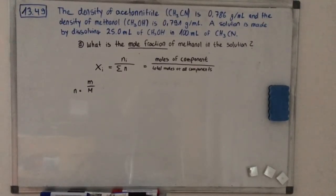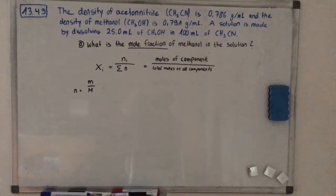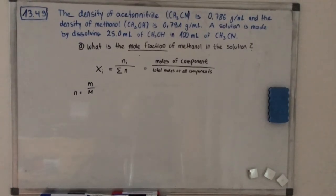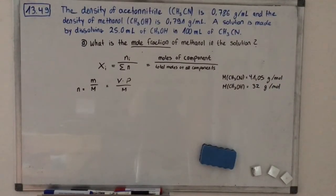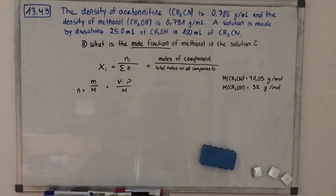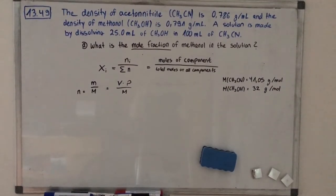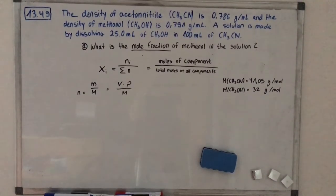To calculate the number of moles we use the formula: mass divided by molar mass. Since we don't have the mass given directly, we use the relationship that volume multiplied by density equals mass. Replacing this, we get: volume multiplied by density, divided by molar mass. The molar masses from the periodic table are 41.05 g per mol for acetonitrile and 32 g per mol for methanol.